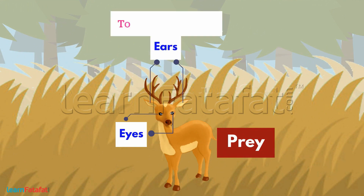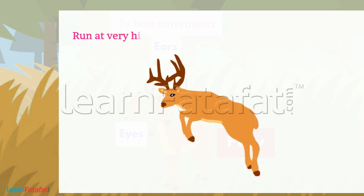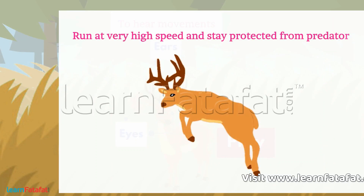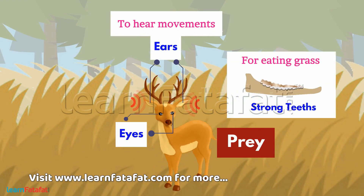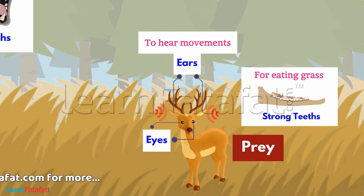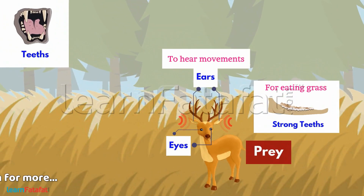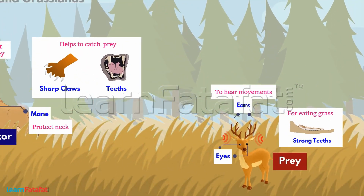Deer, on the other hand, have eyes on the sides of their face. They have long ears to hear movements around them, with which they can identify danger easily. They run at very high speed and stay protected from their predators. For eating grass, they have strong teeth. I hope you got good knowledge about the topic.